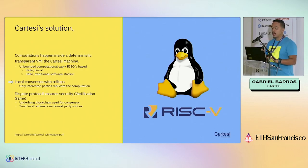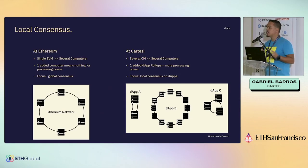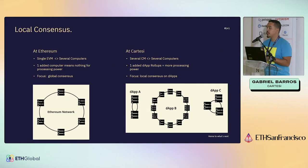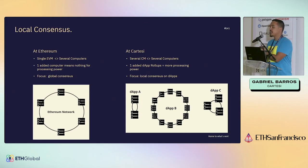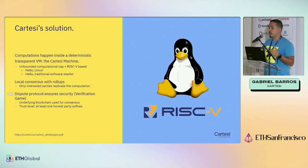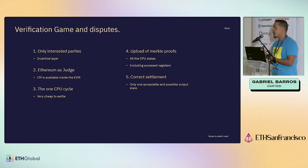The main difference between most optimistic rollups and what Cartesi does is we have local consensus. With Ethereum, the more computers you add to the network you're adding security and decentralization, but you're not adding processing power or throughput. However with local consensus — or app-specific rollups — dApps don't fight for resources amongst themselves. They have their own sets of validators, which means the more dApps you have out there, you're actually increasing the overall capacity of Ethereum to process things.